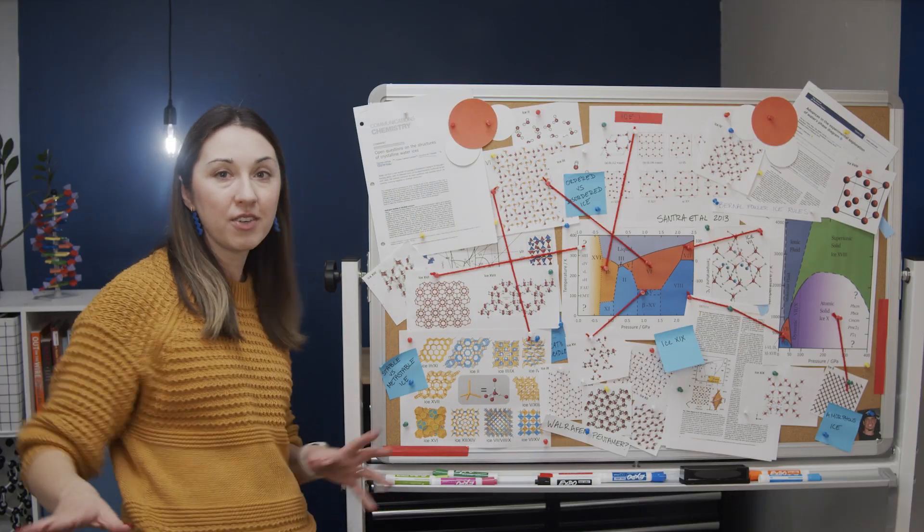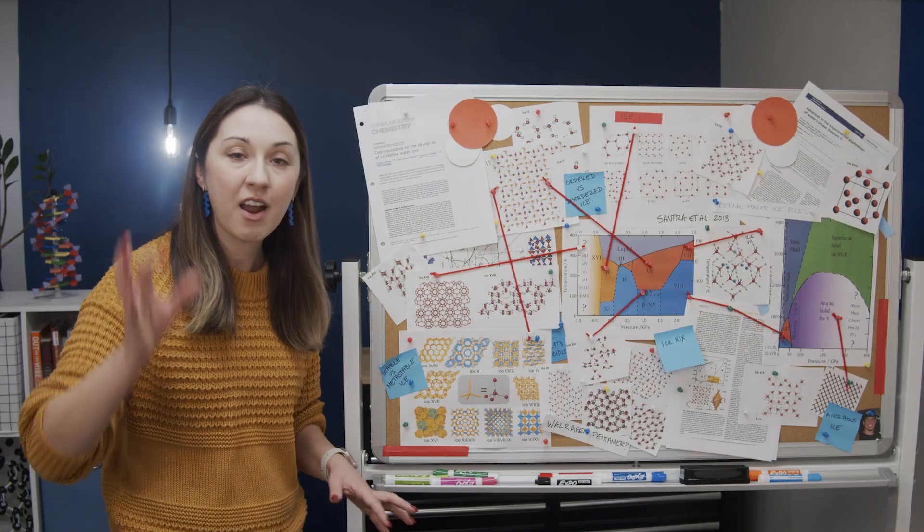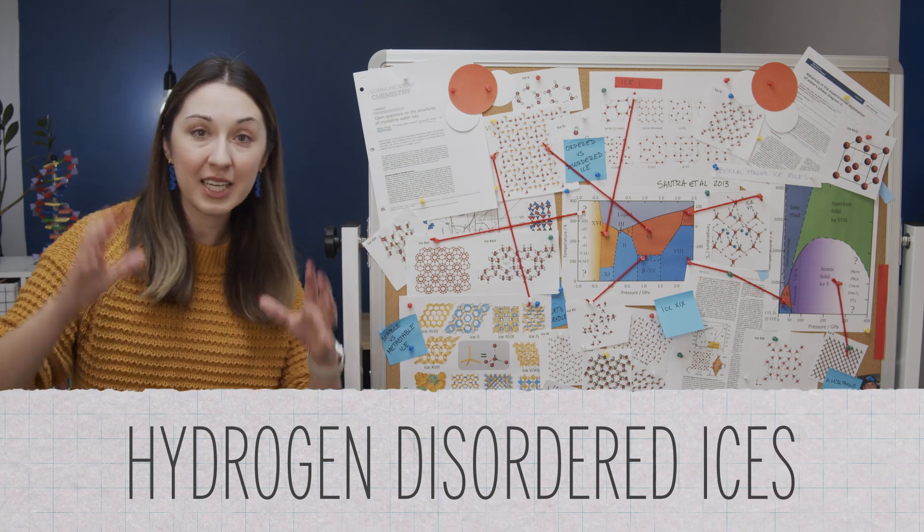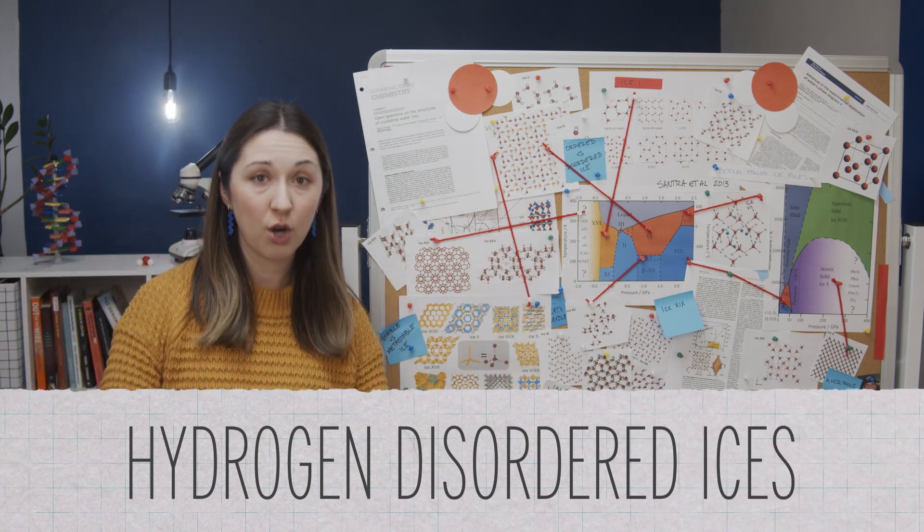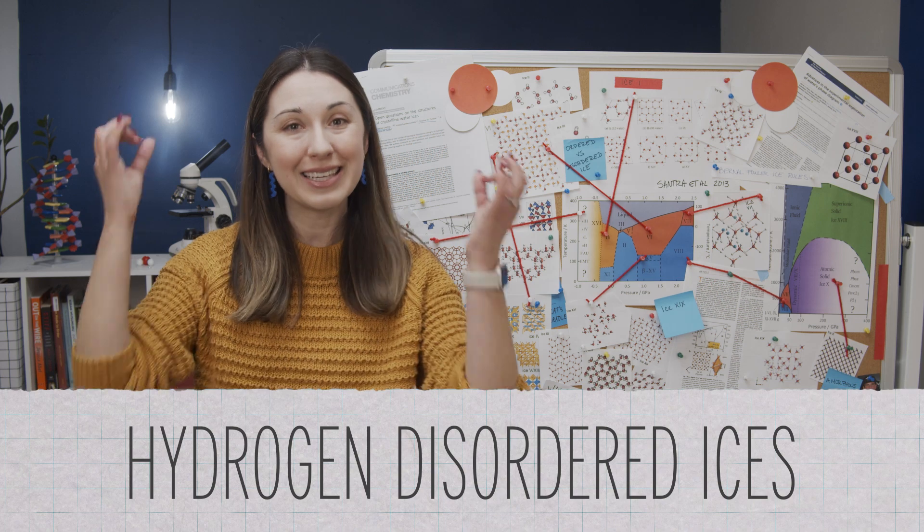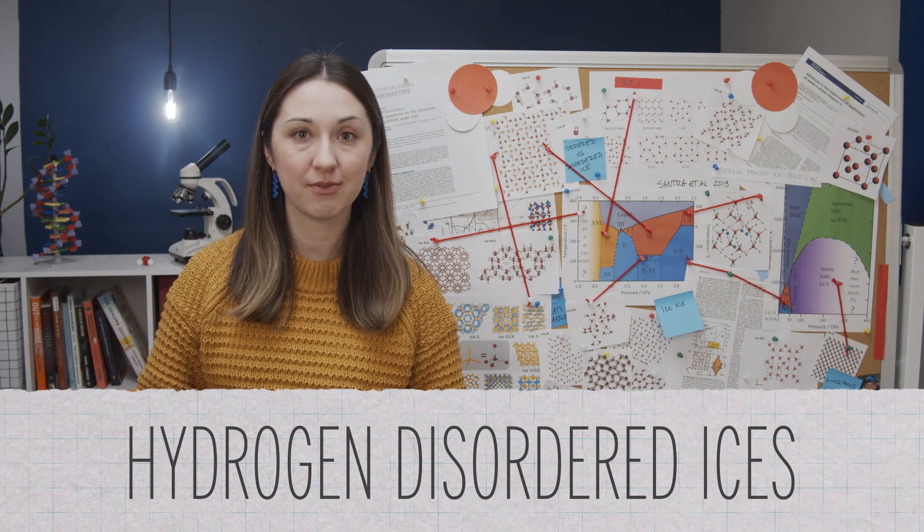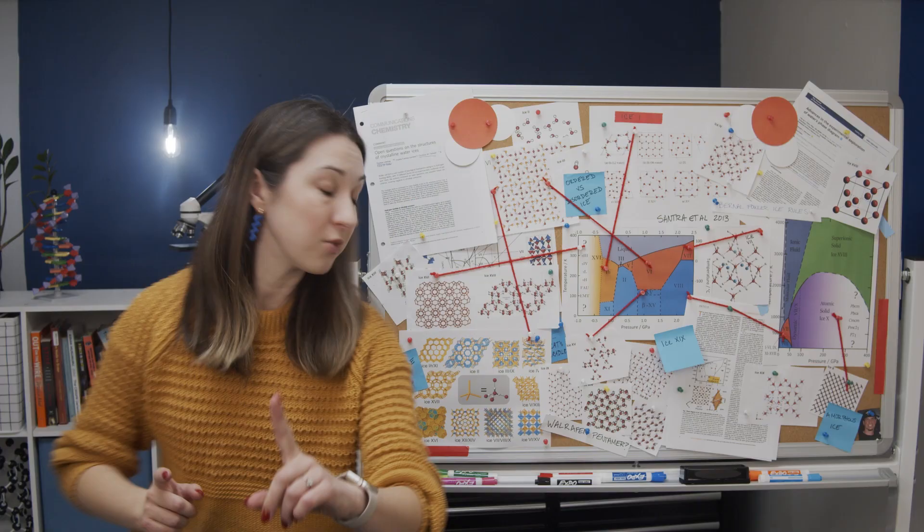There's something I haven't mentioned yet about all of the ices we have talked about so far. They are hydrogen disordered ices. This means that if we zoom into the tetrahedral bonds surrounding a water molecule in the ice crystal, the center water molecule could be oriented in any direction. And that's confusing, so I made a model.